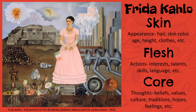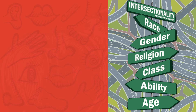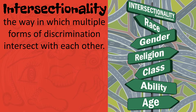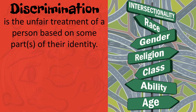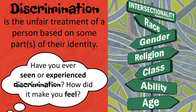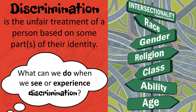Let's take a look at one of Frida's paintings to see how she portrayed some of the different layers of her identity. This work of art is titled Self-Portrait on the Borderline between Mexico and the United States. How has Frida represented her outer layer or piel in this work? Describe her appearance and what she looks like. Next, let's begin to uncover how she's represented her flesh or pulpa — what actions, interests, talents, skills, or languages has she displayed? And finally, let's take an even deeper look. How do you think Frida has visualized her core or centro? What thoughts, beliefs, values, cultures, traditions, hopes, or feelings do you think she's expressed in this self-portrait?